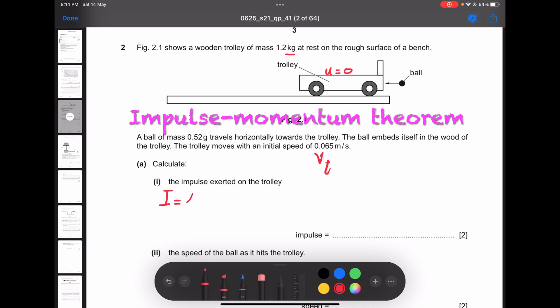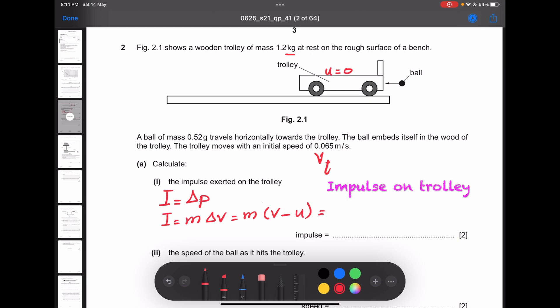I equals m times delta v, the change in velocity. M times the final velocity minus initial velocity, which is u. So the mass is 1.2 for the trolley times the final velocity 0.065 minus initial velocity zero.